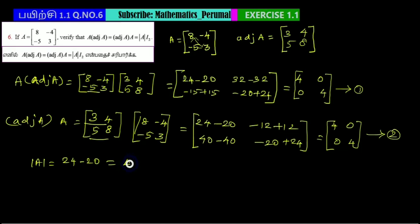The determinant value is 4. Determinant times I₂ equals 4 times the identity matrix [1, 0; 0, 1], which equals [4, 0; 0, 4].